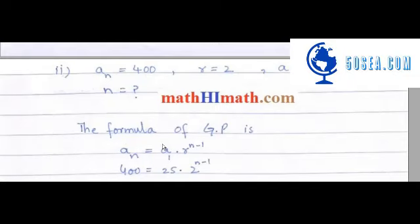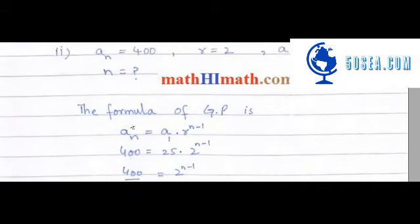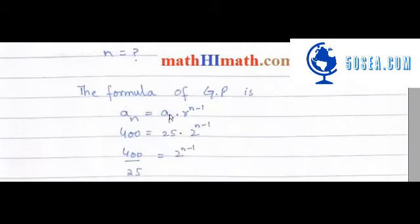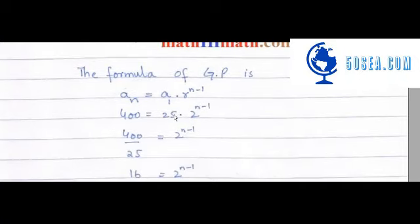Second part میں بھی an given ہے، r بھی given ہے، a1 بھی given ہے، بالکل اسی طرح سے n find out کرنا ہے۔ Simply geometric progression کے formula میں values put up کریں: an is equal to 400 is equal to a1 جو 25 ہے، multiplied by r جو 2 ہے، 2 raised to power n-1۔ 25 کو دوسری side لائیں تو 400 divided by 25 جو کہ 16 return کرتا ہے۔